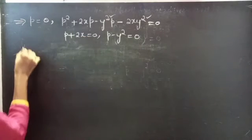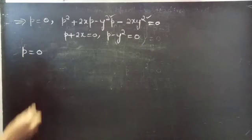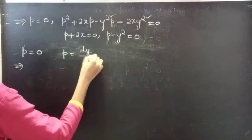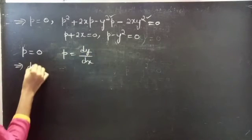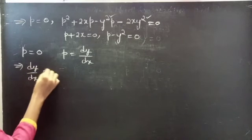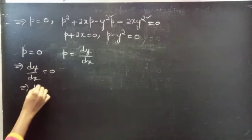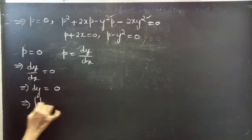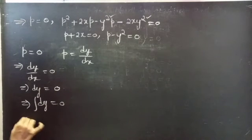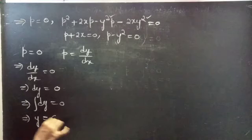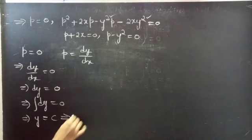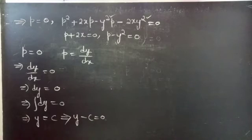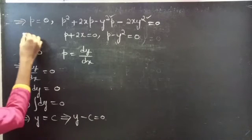Consider P equals zero first. Putting P equals dy/dx, we get dy/dx equals zero, so dy equals zero times dx. Integrating both sides, we get y equals constant C, or equivalently y minus C equals zero, which is the solution for P equals zero.